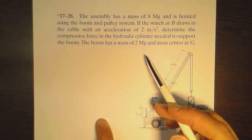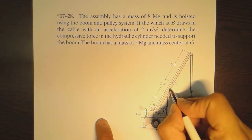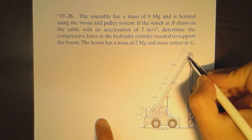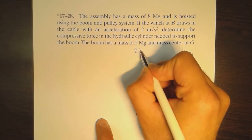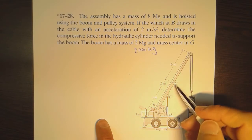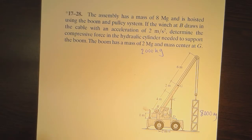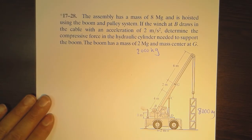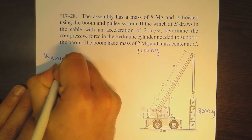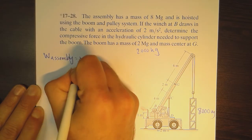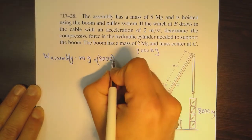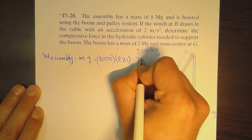The boom has a mass of two megagrams, which is two thousand kilograms, and the center of mass of the boom is at G. We start by calculating the major quantities needed for the equations of motion. The weight of the assembly is equal to mass times gravity: eight thousand kilograms times 9.81, which equals 78,480 newtons.